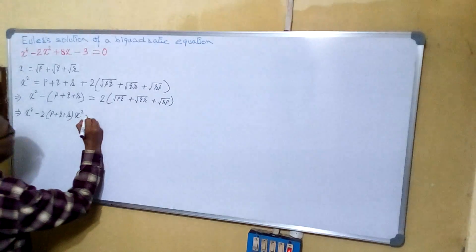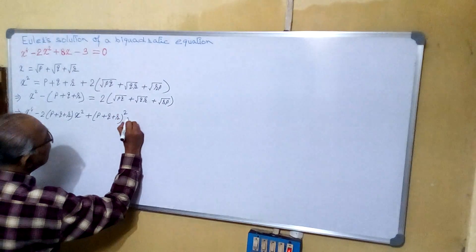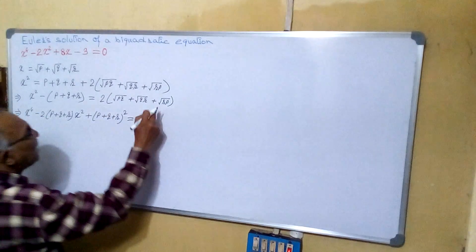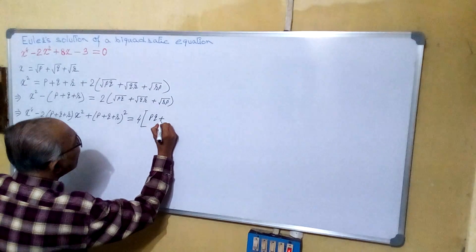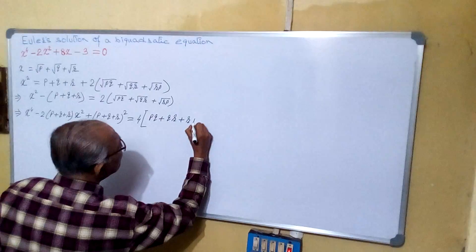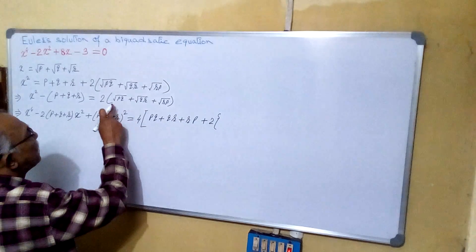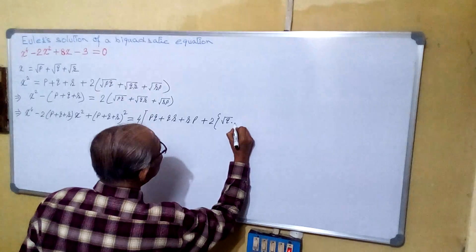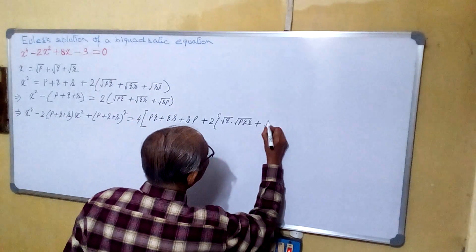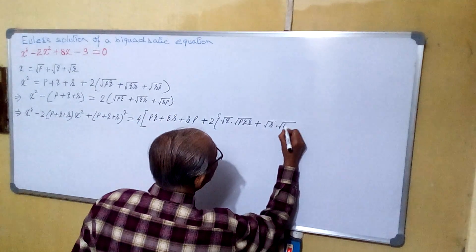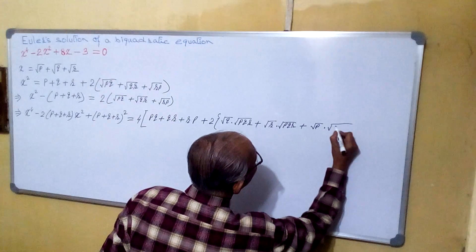What we can get: X squared minus 2(P plus Q plus R) into X squared plus (P plus Q plus R) whole squared equals to 4. Using the same expansion A plus B plus C whole squared, it will be PQ plus QR plus RP plus 2 into root Q times root PQ·R, plus root R times root PQ, plus root P times root PQ.